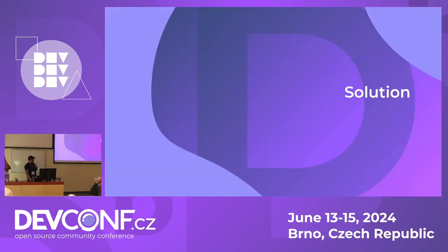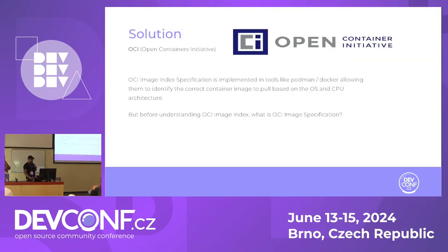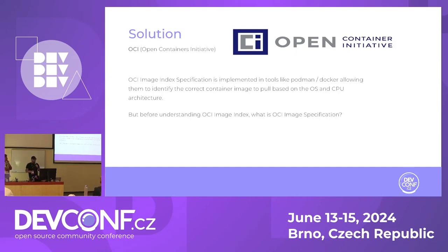So how is the solution to build it? We have OCI, which is the Open Container Image standard. In the OCI, we have the OCI image index specification, which is implemented in tools like Podman and Docker, allowing them to identify the correct container image to pull based on the OS and CPU architecture that the command is running.